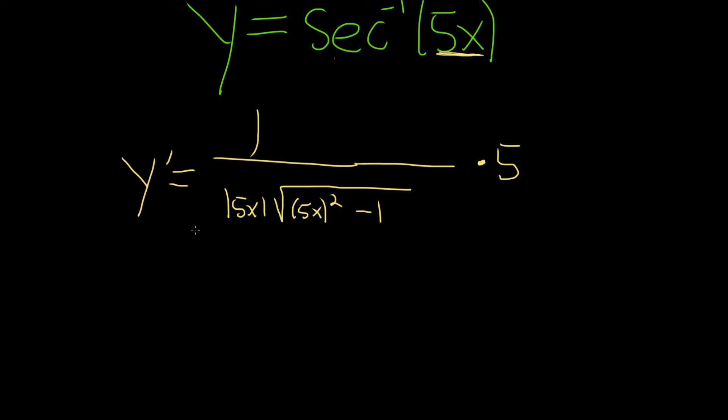At this point, we can do some simplification. This is equal to, I'll put the 5 up top. On the bottom, the absolute value of 5 times x can be broken up as absolute value of 5 times absolute value of x. And the absolute value of 5 is 5, so you can pull the 5 out of the absolute value.